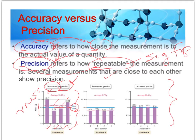The second graph — look at how repeatable all of these mass values are. Very precise data. However, aside from being very precise, all of the values for all four trials are off significantly from the known value, which is that blue line. So even though they are precise measurements, they are not accurate.